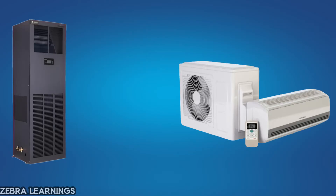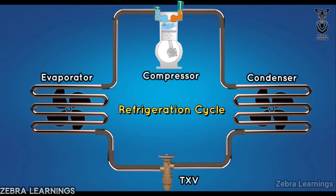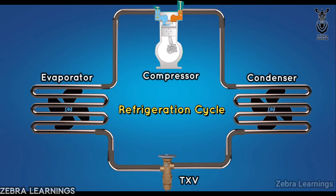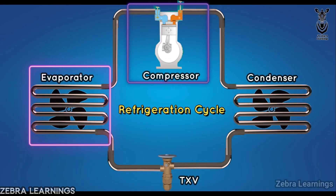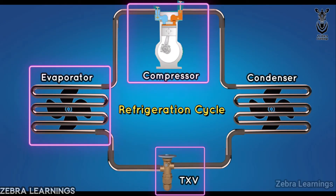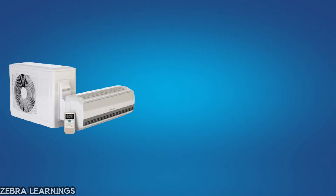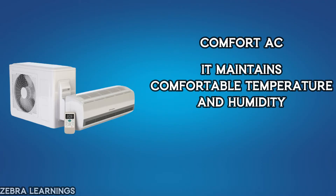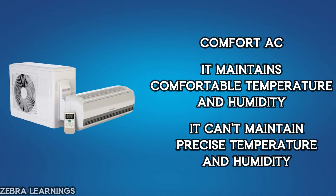Precision air conditioners are just like the normal ACs we use. Both work on the refrigerant cycle concept, so in both units you will find an evaporator, compressor, expansion valve, and condenser. The AC we normally use is called a comfort AC. This AC helps us maintain a comfortable temperature and humidity level. However, it may not be as precise in maintaining the exact temperature and humidity.